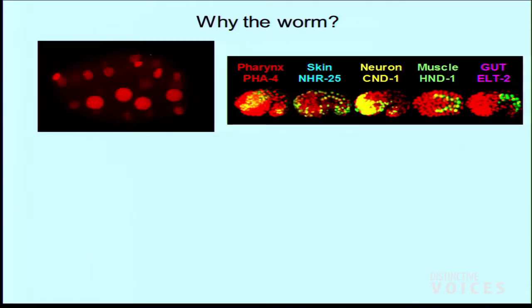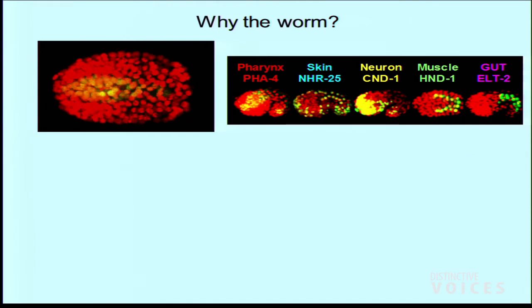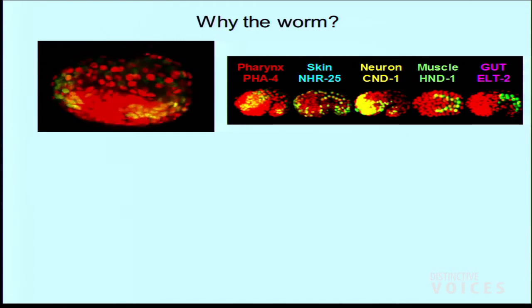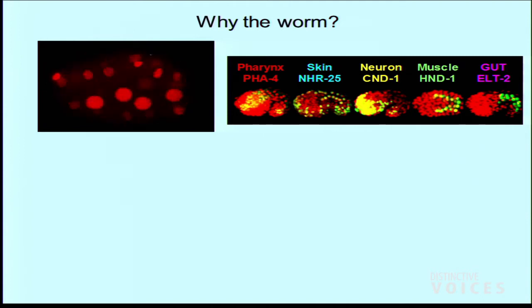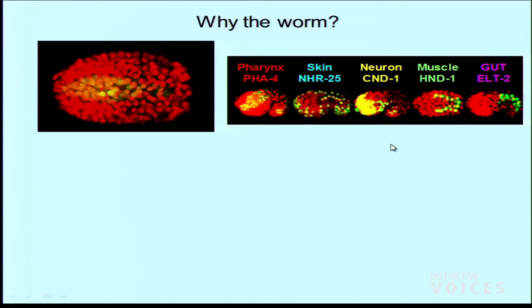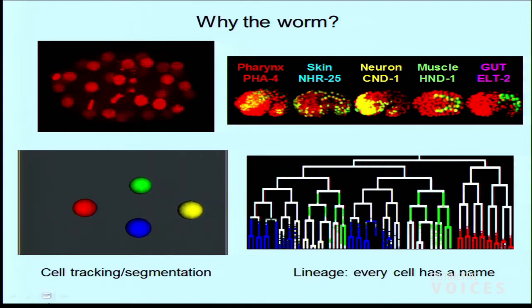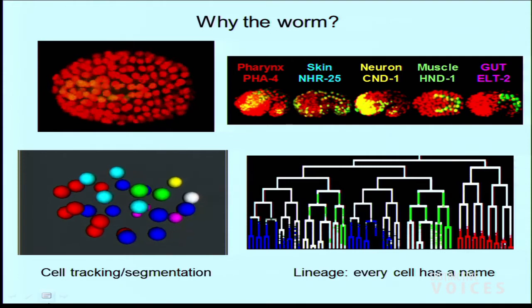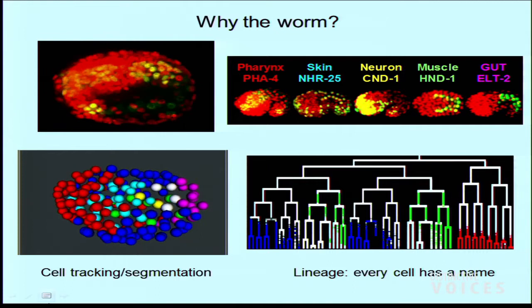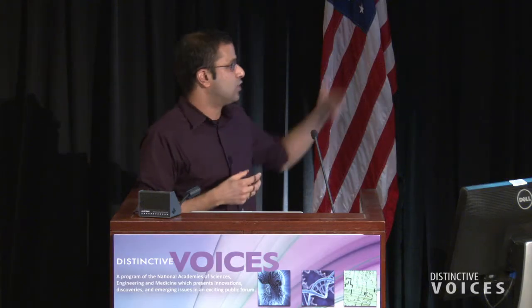We can also use a fluorescence microscope to tag particular proteins — in this movie we're looking at histones that label the DNA, and you can see the individual nuclei of all the cells. We can track sub-lineages: the pharynx, skin, neurons, muscle, gut. Because development is stereotyped, we can track individual nuclear divisions, follow what each cell will become, and refer back to Sulston's lineage to identify each cell. C. elegans remains the only animal from which we can predict, from images alone, what each cell will become — a huge advantage.